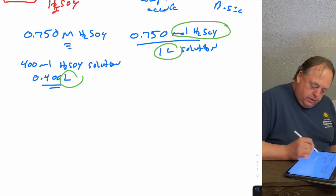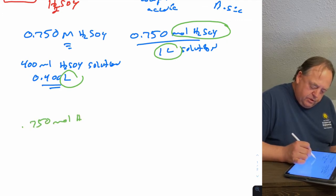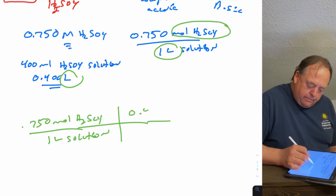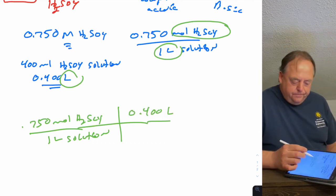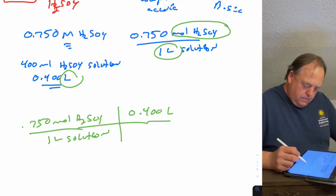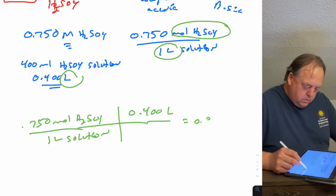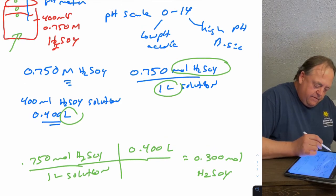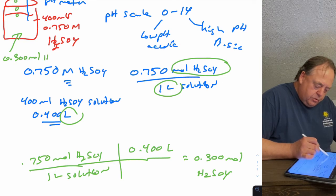So, 0.750 mole of H2SO4 per one liter solution - let's set up a dimensional analysis. If we multiply that by the 0.4 liters, then that would tell us how many moles of H2SO4 is in the flask. This beaker that we have has 0.300 moles of H2SO4 in it.